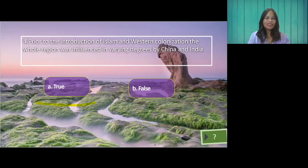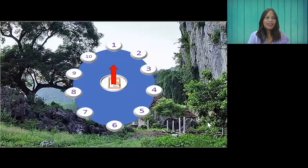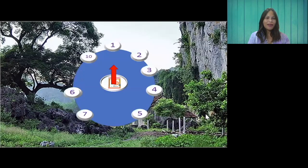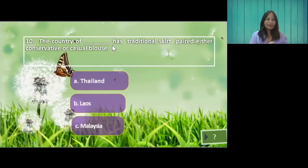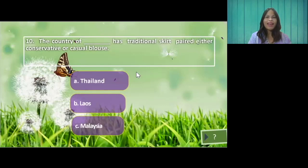Next question. Let's spin again. We have question number 10. A country has a traditional skirt that is either conservative or casual. A. Thailand. B. Laos. C. Malaysia. The answer is letter B — Laos.